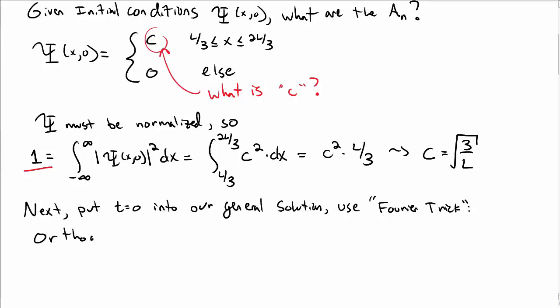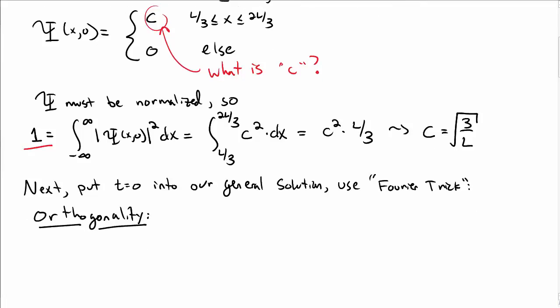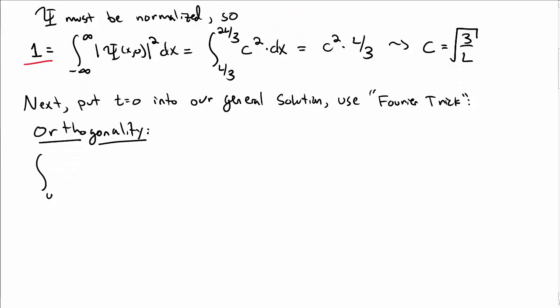Just to remind you of the Fourier trick, it's based on the idea of orthogonality. So in particular, if you integrate from 0 to L, sine of n pi over Lx and sine of m pi over Lx dx, you get L over 2 times a quantity called delta Mn, the Kronecker delta symbol.